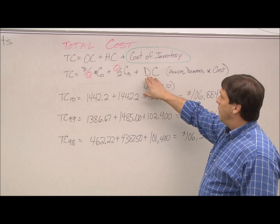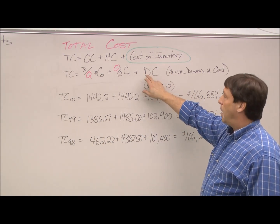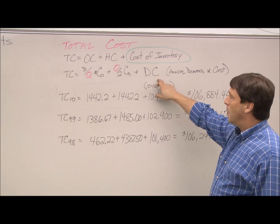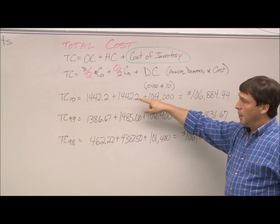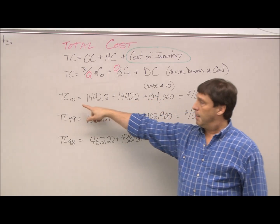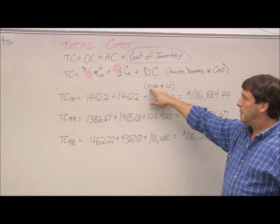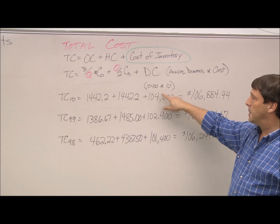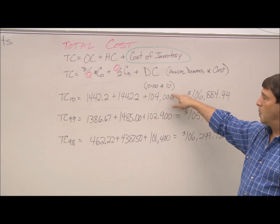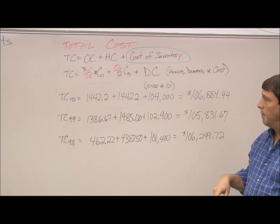For our cost of inventory, we use our annual demand plus the cost of inventory. So for the first one, which is the $10, it's 10,400 times 10, is what we do for our cost of inventory.